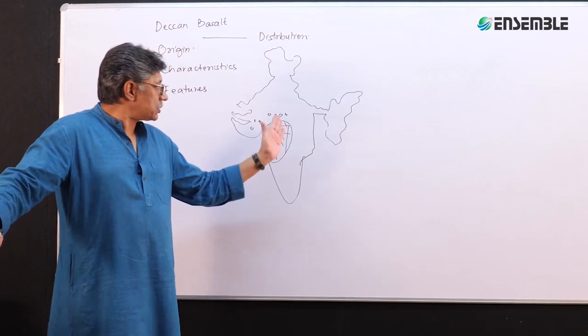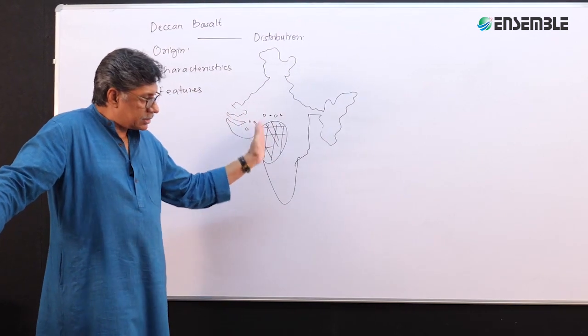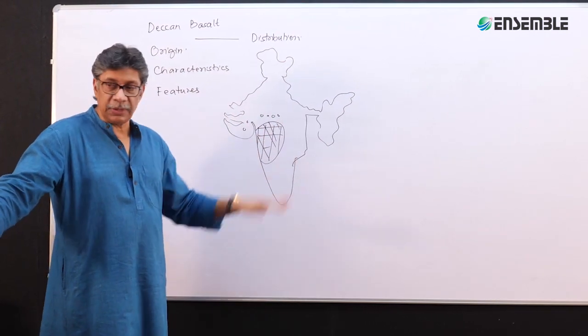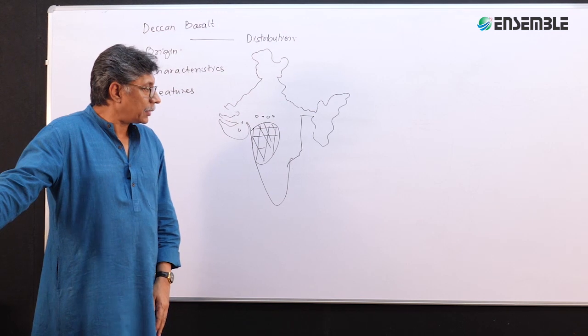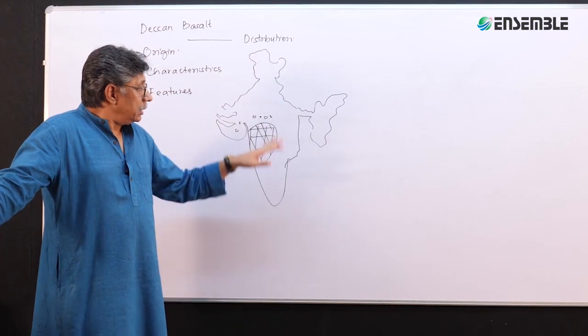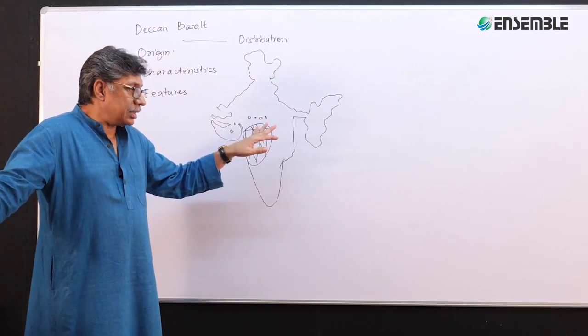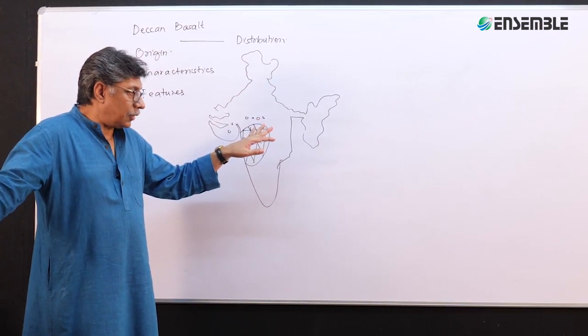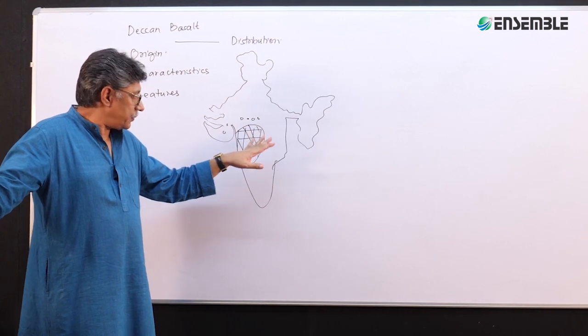The thickness of the basaltic layers is greater on the western side and less on the eastern side. These Deccan basalts originated from three models.